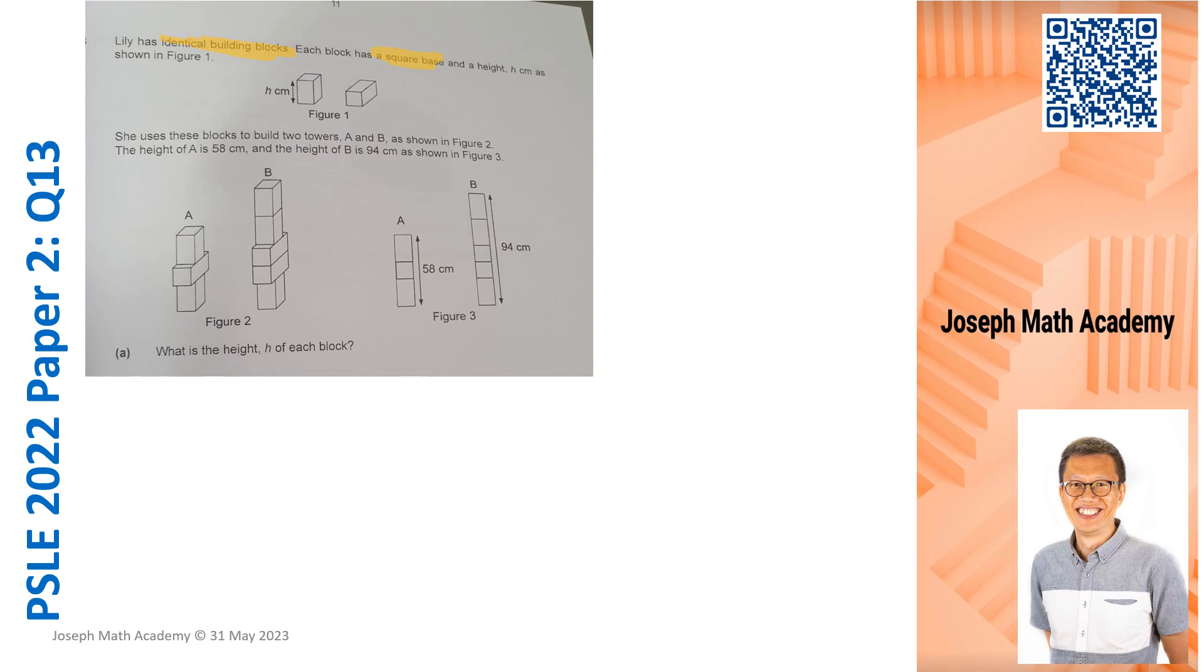Lily used identical blocks to build Tower A and Tower B shown in Figure 2. And Figure 3 is actually the side view representation. Let's begin. I am going to begin by using Figure 3, the side view, and I am going to re-sketch.